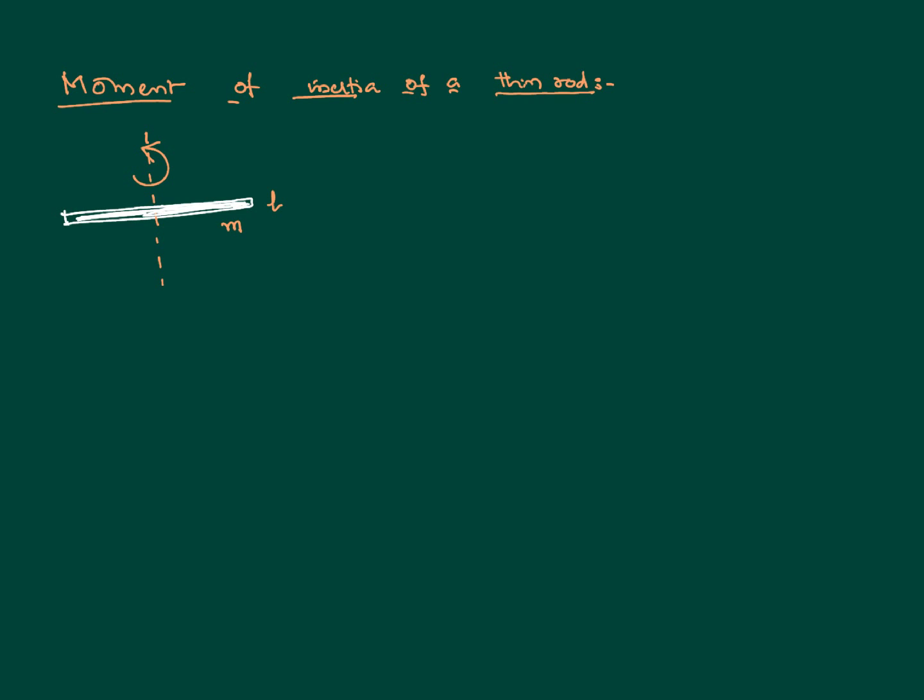Now let us assume that it is rotating about an axis passing through the center. The axis is at a distance of L by 2 from both ends and is perpendicular to the plane. The moment of inertia of this system can be determined using integration, and it can be proved that its value is equal to mL square divided by 12.